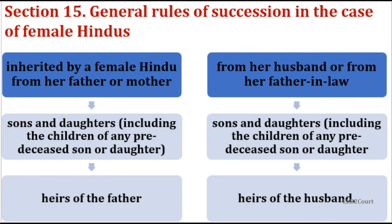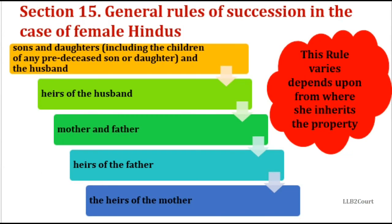This rule varies depending on where she inherited the property, as seen in Section 15(2). Suppose a female Hindu inherits property from her father or mother — in absence of her children it will go to heirs of the father. If she inherits from her father-in-law and in absence of her children, it will go to heirs of the husband. So if she possesses self-acquired property, Section 15(1) is applicable; if she inherits from father, mother, husband, or father-in-law, Section 15(2) is applicable.